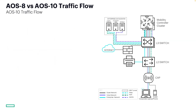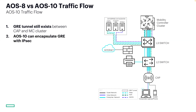Now let's take a look at AOS 10 tunnel mode. While Wi-Fi client traffic is handled similarly in both AOS 10 tunnel mode and AOS 8 campus mode, there are some differences. In this example, both platforms encapsulate Wi-Fi client traffic between the AOS 8 controller or AOS 8 gateway and the respective APs. But in AOS 10, you can now configure it to also encapsulate GRE with IPSec.